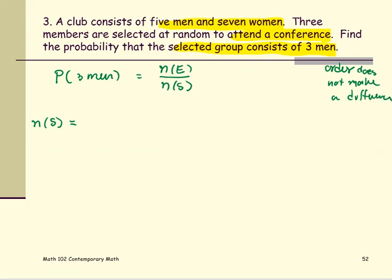So N(S), the total people, 5 plus 7, that's 12. So we have 12 people, combination, selecting three people from the group of 12.